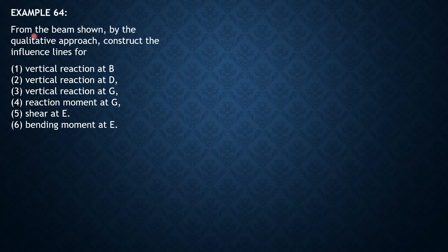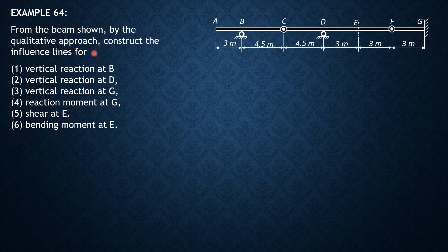Let's have the qualitative approach to example 64. From the beam shown, with a qualitative approach, construct the influence lines for vertical reaction at B, vertical reaction at D, vertical reaction at G, reaction moment at G, shear at E, and bending moment at E.